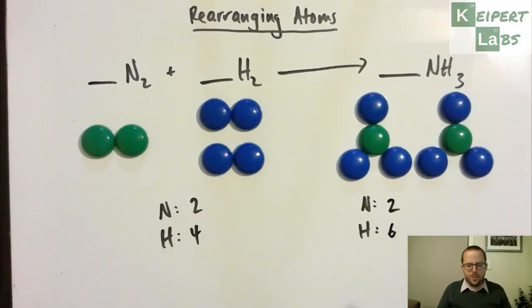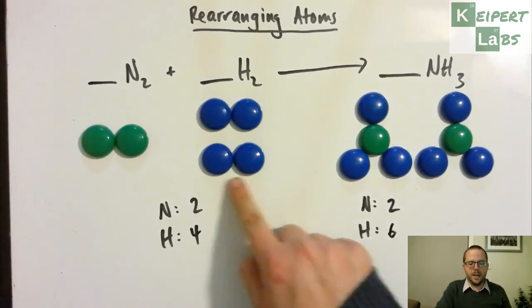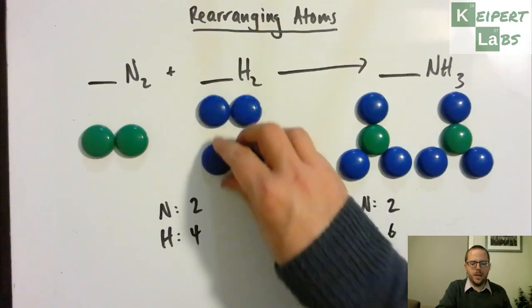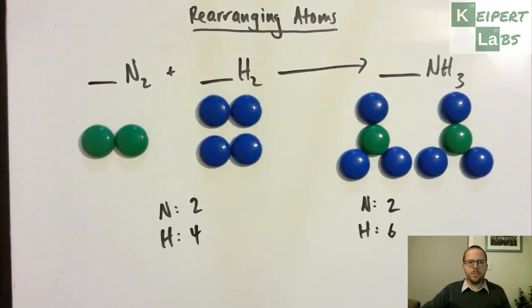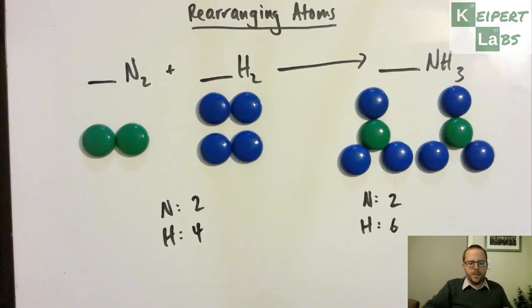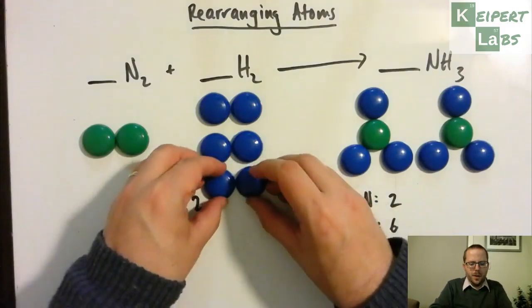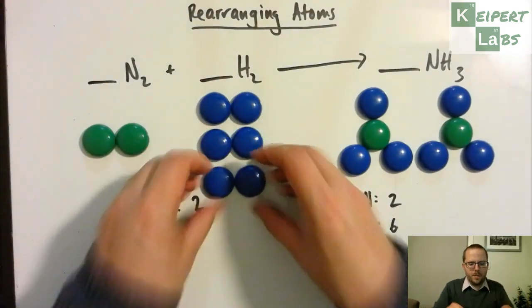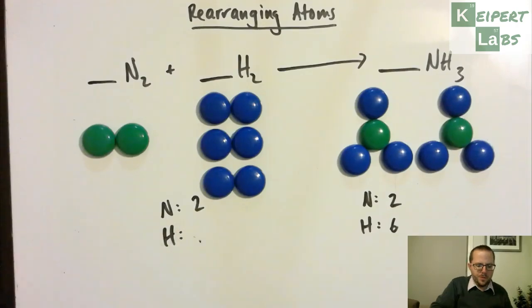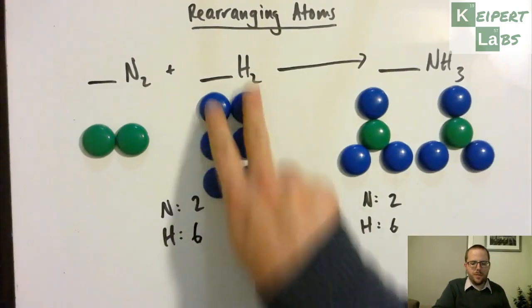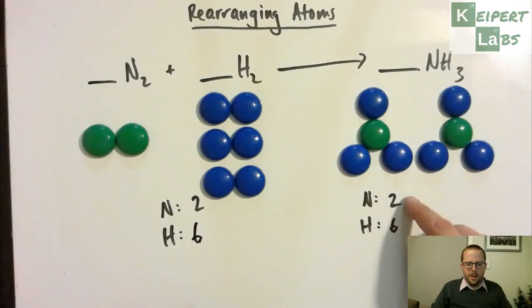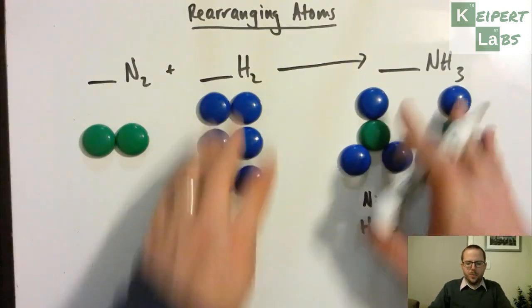But in doubling my numbers of ammonia here, I now have six hydrogens. So I've got two and two, but now I've got four and six. But that is easily fixed. If I add in an extra hydrogen over here, then we can fix that problem. So I can add in a third hydrogen molecule over here. It takes me up to six hydrogens, three lots of two. I now have two nitrogens, so two greens and six blues on each side.